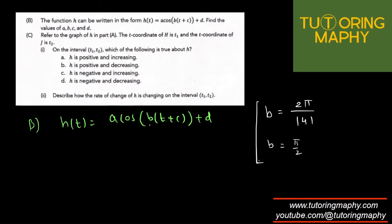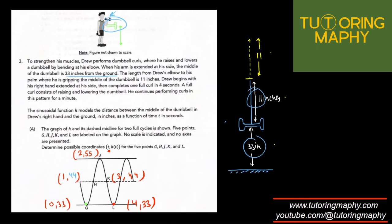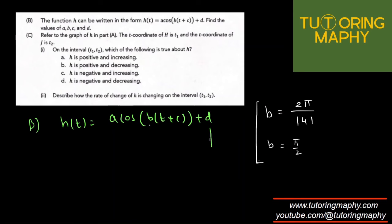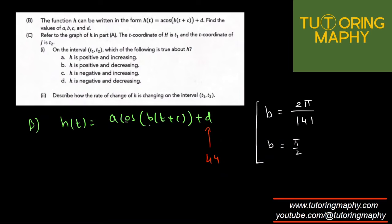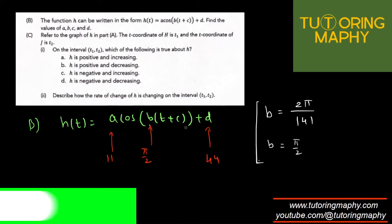A is the amplitude and d is the midline. The midline is 44. The amplitude is the distance between the midline and the maximum, which is 55 minus 44, so that's 11. What is c?